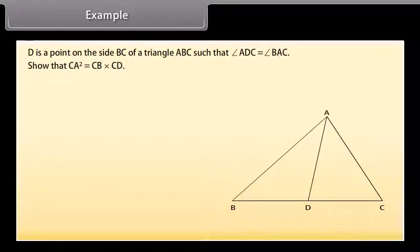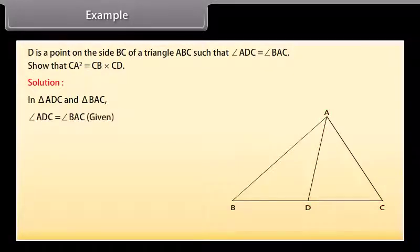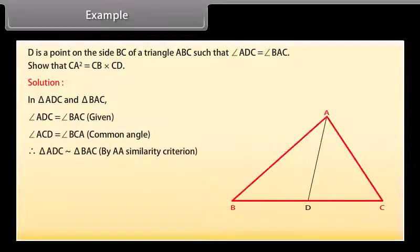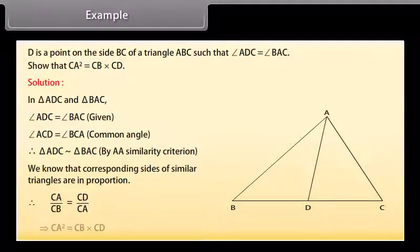In triangle ADC and triangle BAC: angle ADC equals angle BAC (given), angle ACD equals angle BCA (common angle). Therefore triangle ADC is similar to triangle BAC by AA similarity criterion. We know that corresponding sides of similar triangles are in proportion, therefore CA upon CB equals CD upon CA, which implies CA squared equals CB into CD.